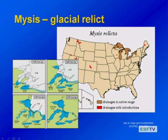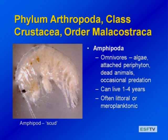Mysis relicta is the former name of these organisms, recently renamed. We see this natural distribution in the deeper Great Lakes. They've been introduced into some other lakes — we'll talk about consequences of an introduction into Flathead Lake in Montana later in the invasive section. We also have amphipods in the class Crustacea — mentioned in the stream section. They're not only benthic; they can come up into the plankton as meroplankton. They eat attached algae, dead animals, and can occasionally be predators. Both Mysis and amphipods can live for several years.